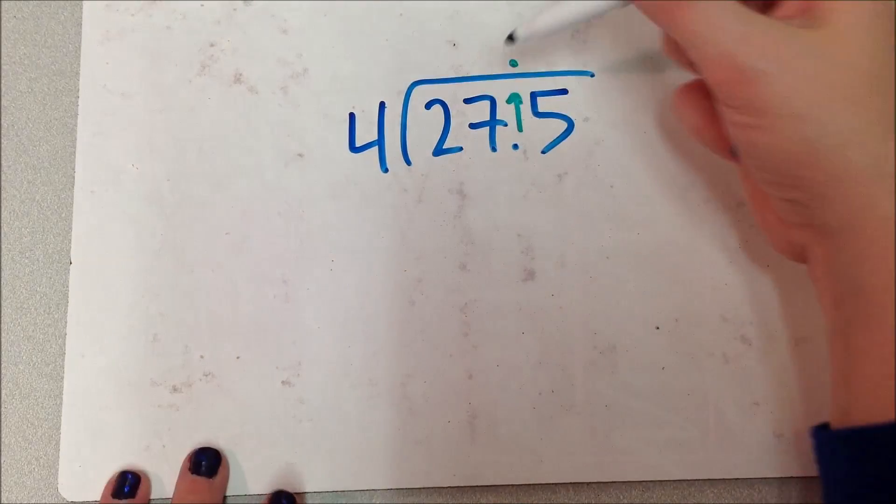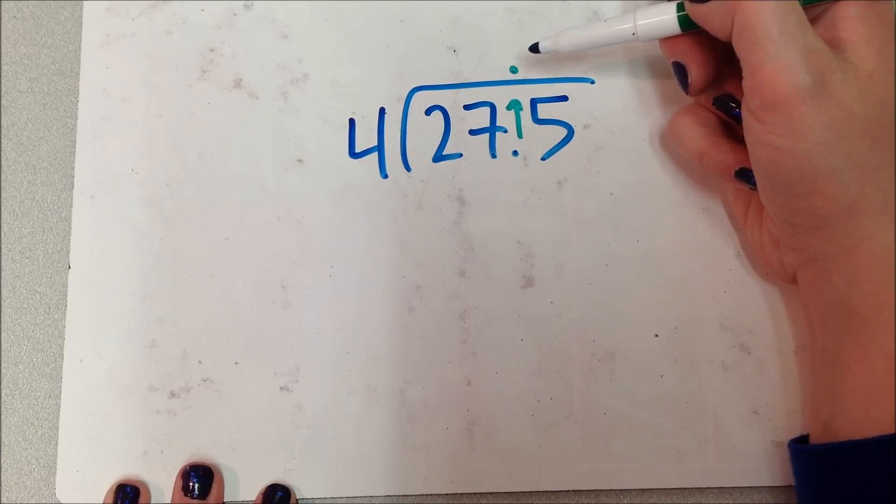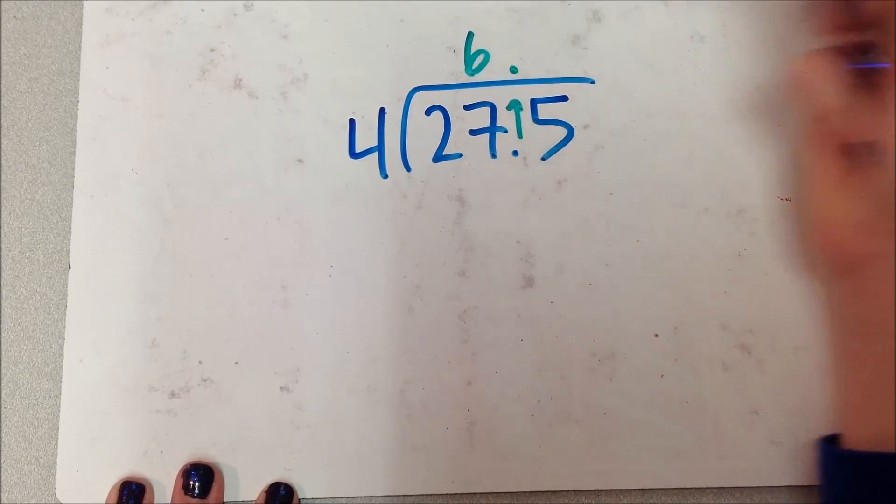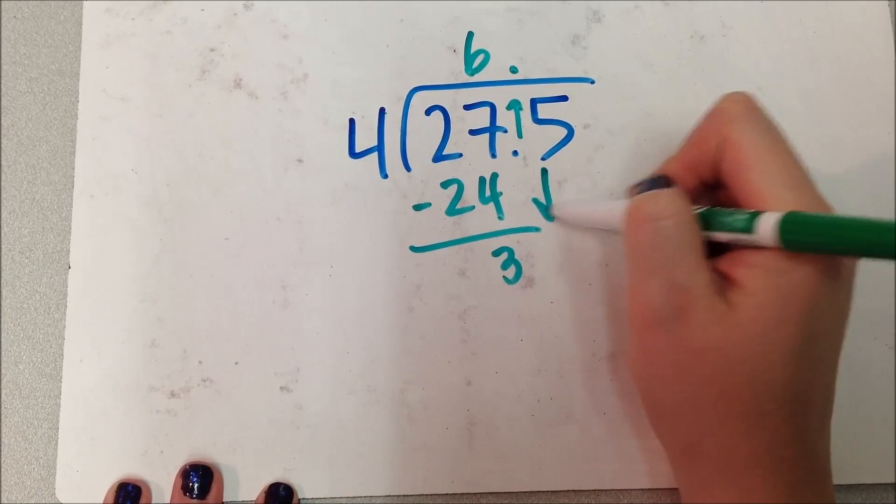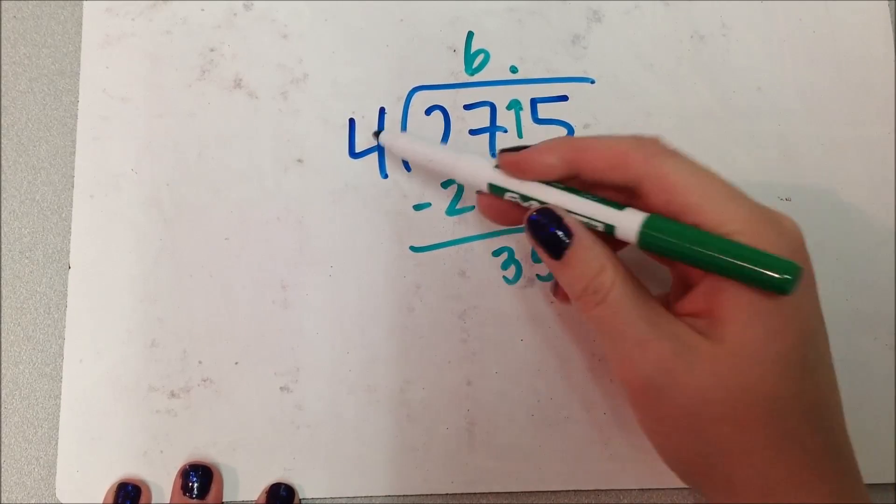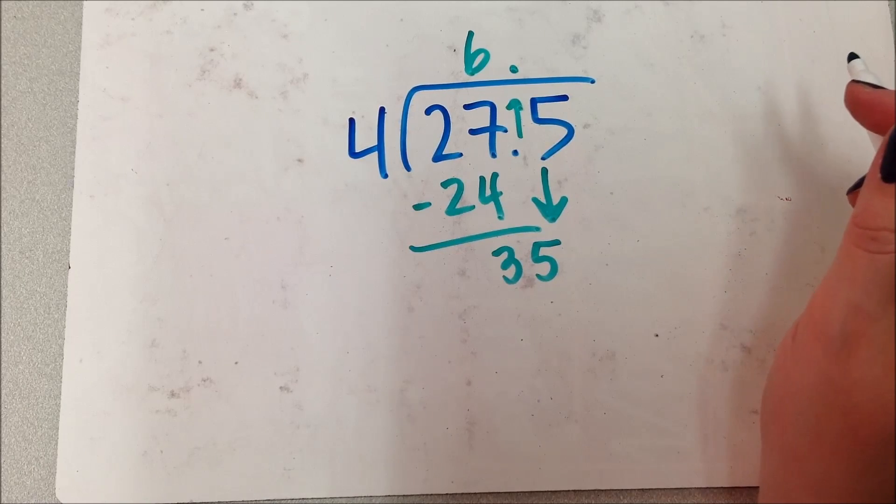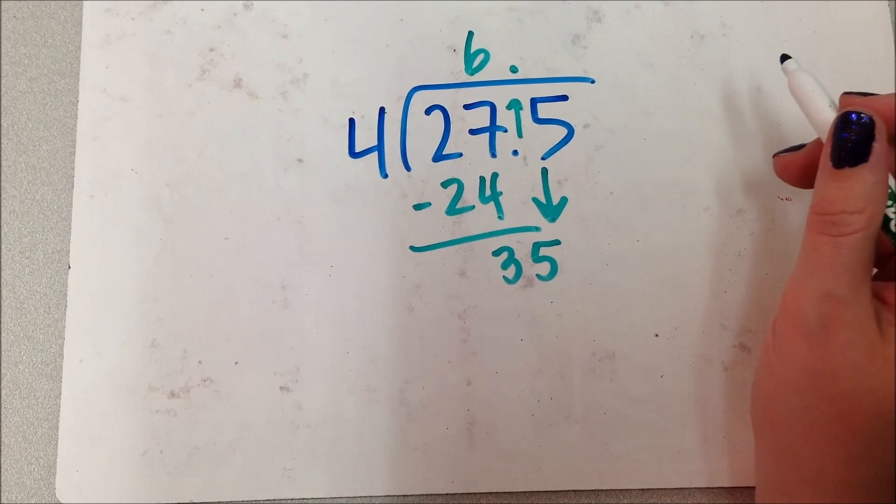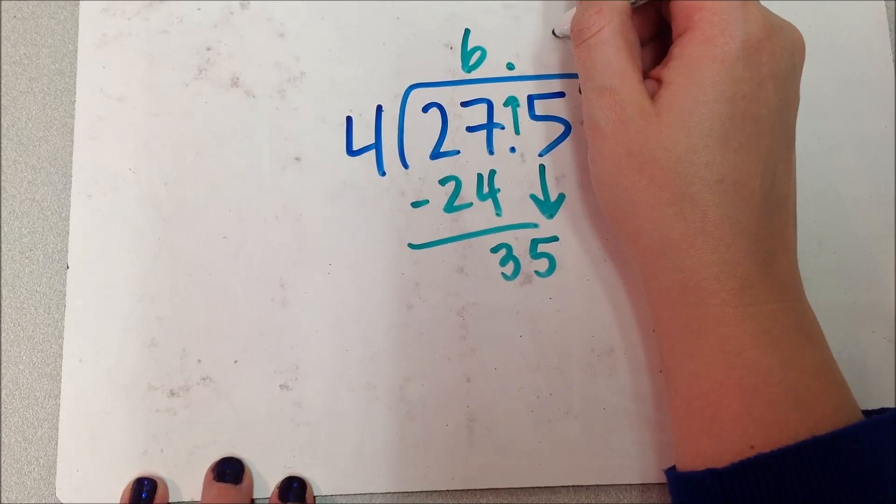I have to go into that whole 27. How many times does it go? 4 times 7 is 28, so that's too big. So it must be 4 times 6, which is 24. I have 3 left over. I'm going to bring the 5 down. 4 into 35 goes how many times? Excuse me.